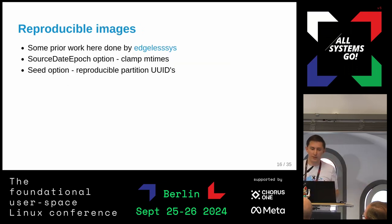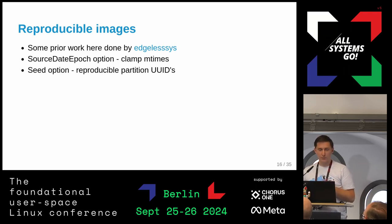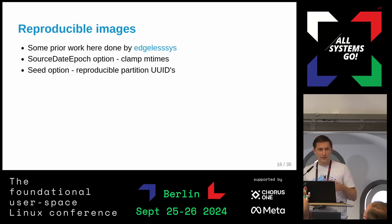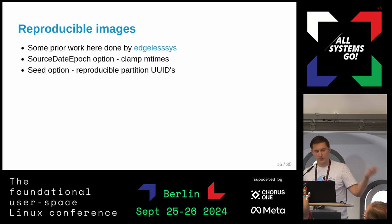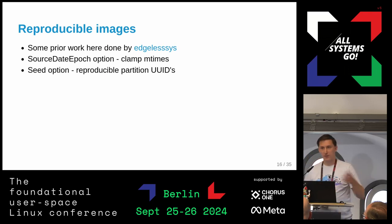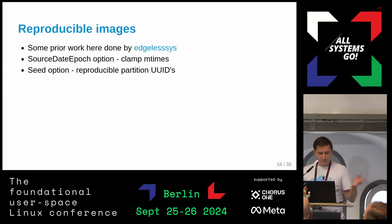For MakeOSI, some prior work was done by Atlas Systems — they built more of an embedded image with a squashfs image, but they already did a bunch of hard work in repart and MakeOSI to clamp timestamps. They added the `SOURCE_DATE_EPOCH` option to clamp mtimes. There's also a seed option so systemd-repart generates predictable partition UUIDs rather than randomized ones.